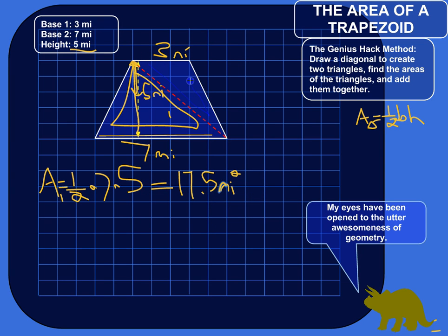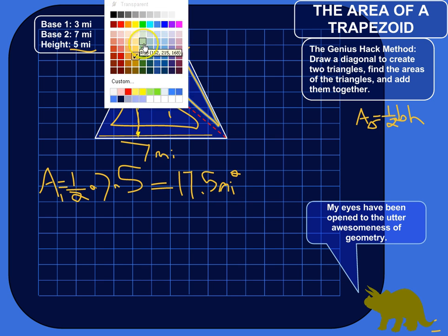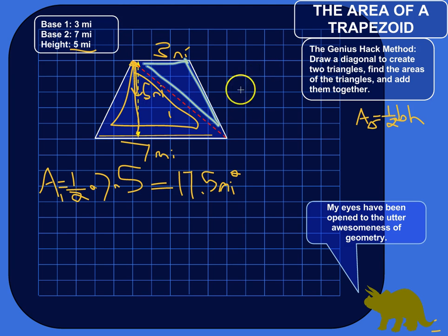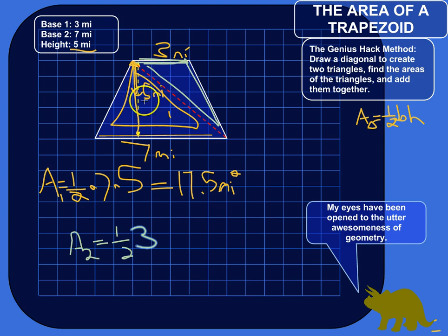Now let's look at triangle two. The area of triangle two is one-half base times height. The base of this triangle is the base of the trapezoid over here — three miles. And the height is five, the height of the trapezoid.